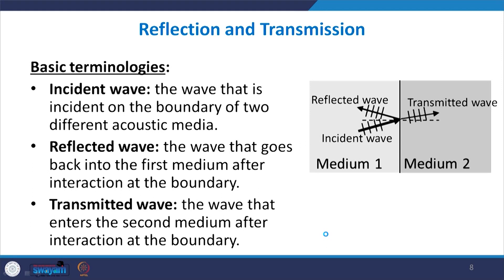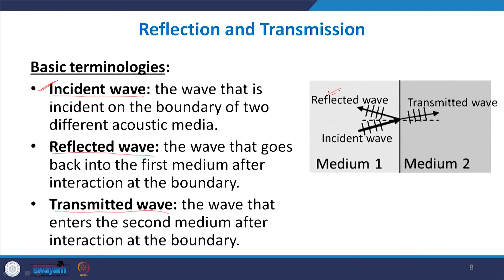Let us define some terminologies. The incident wave is the original wave front that is hitting the boundary. The reflected wave is the part that, after hitting the boundary surface, goes back into the same medium from which the original wave was coming. The transmitted wave is the part that, when the incident wave interacts with the boundary, enters into the second medium.